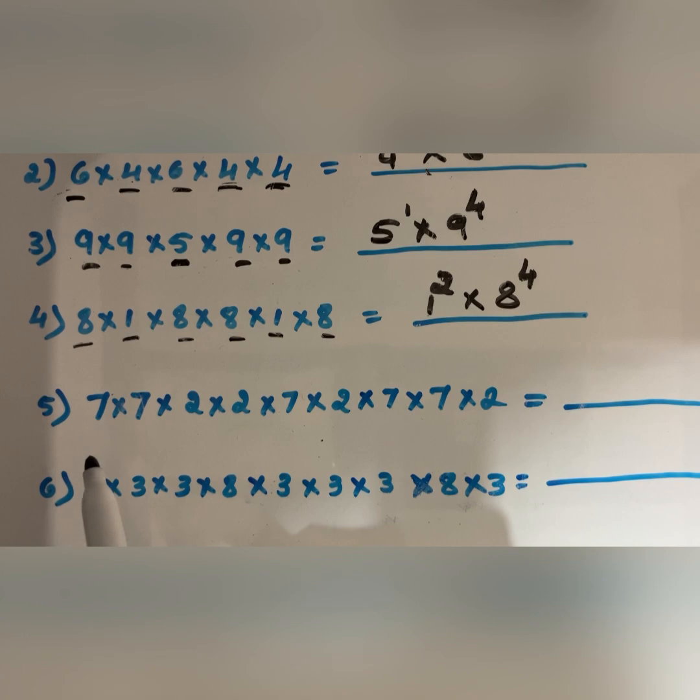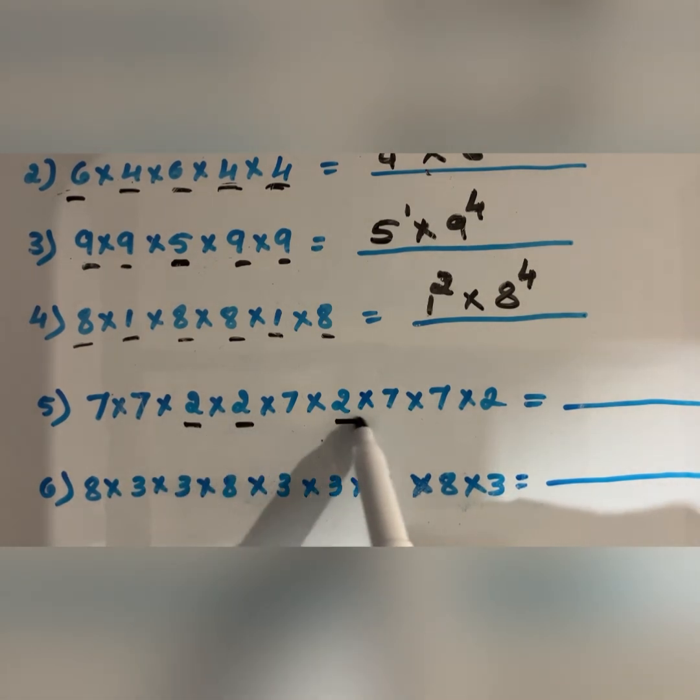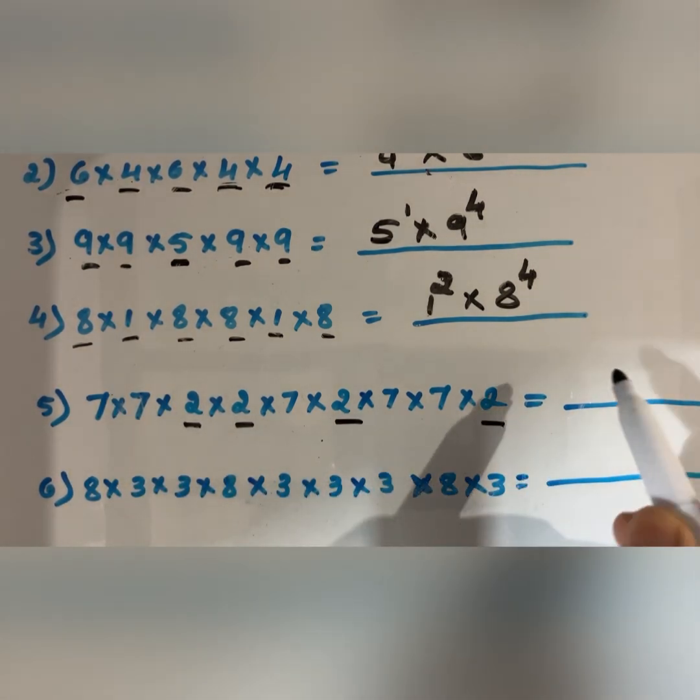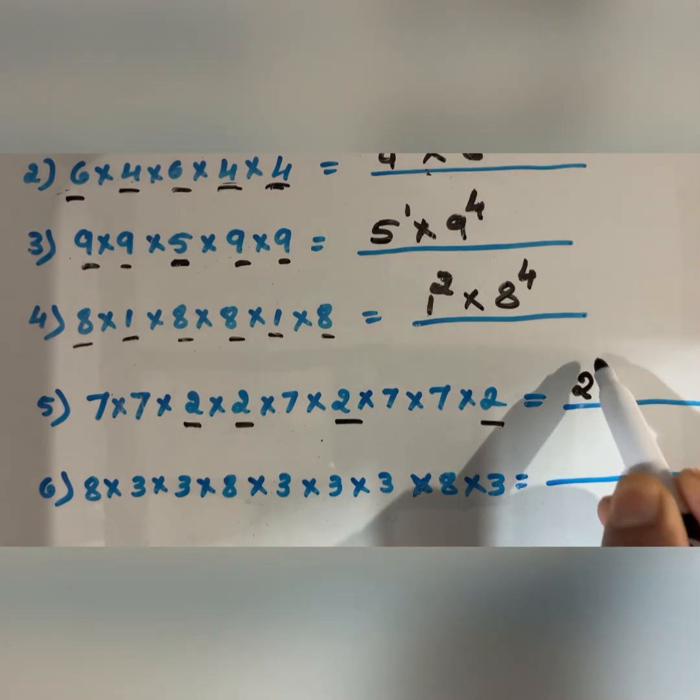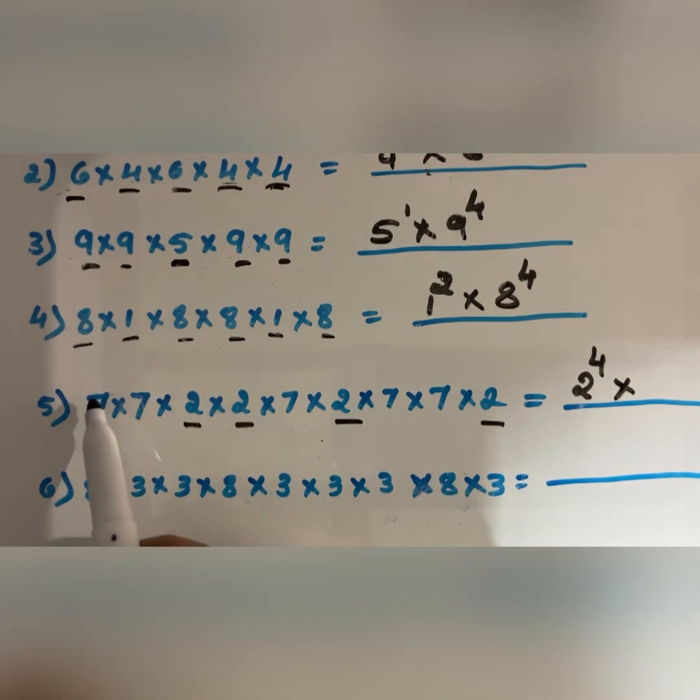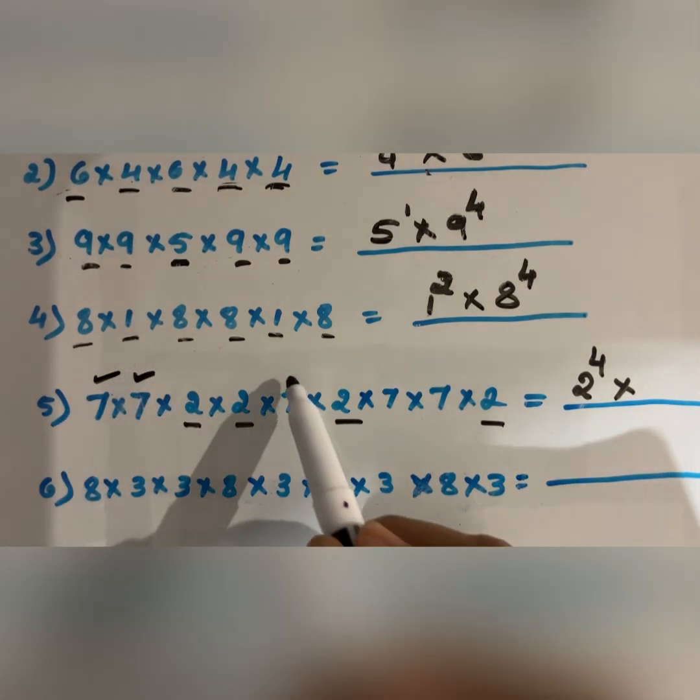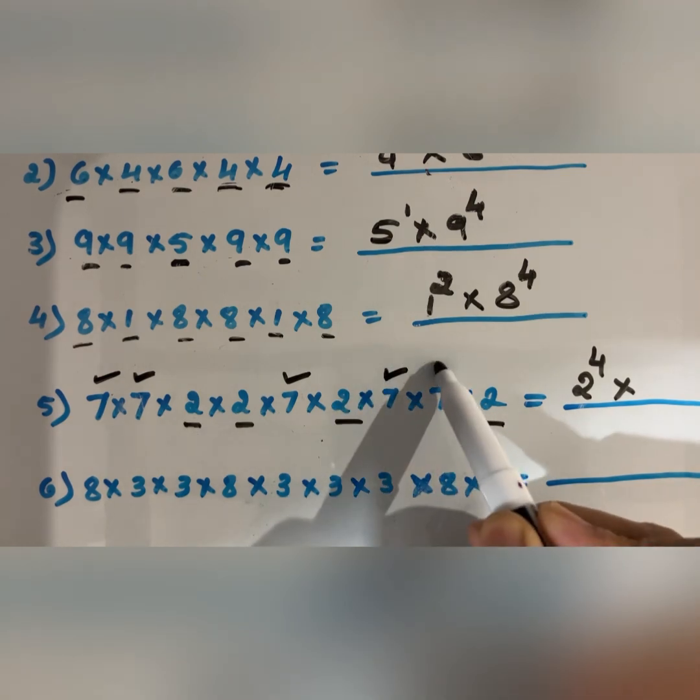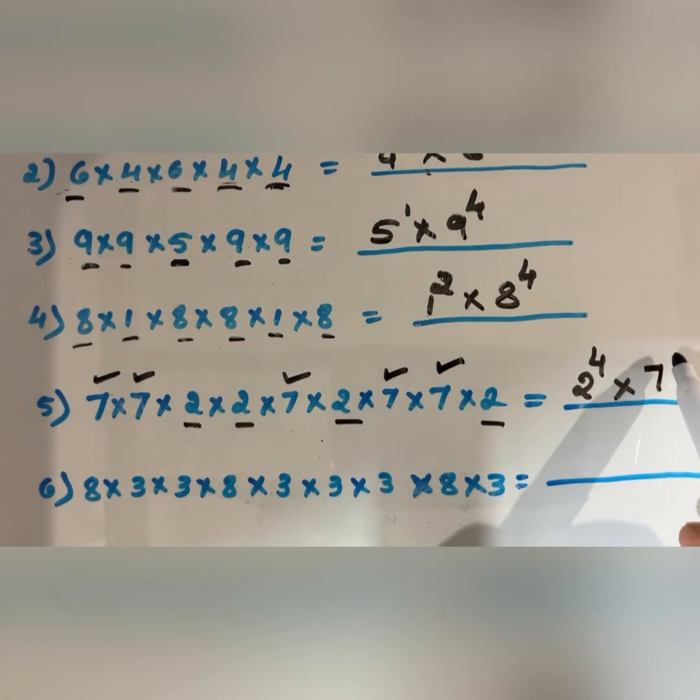Next question. How many 2's are there? 1, 2, 3, 4—so 2 to the power 4. How many 7's? 1, 2, 3, 4, 5—so 7 to the power 5.